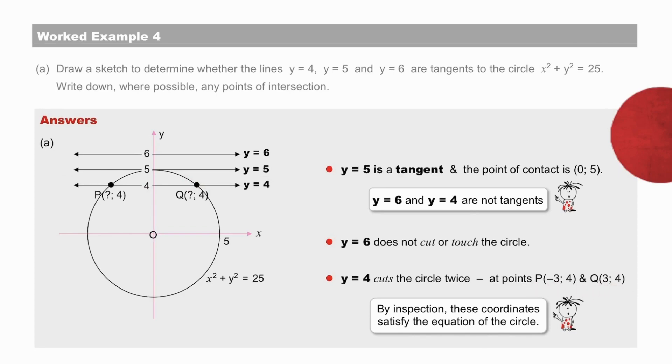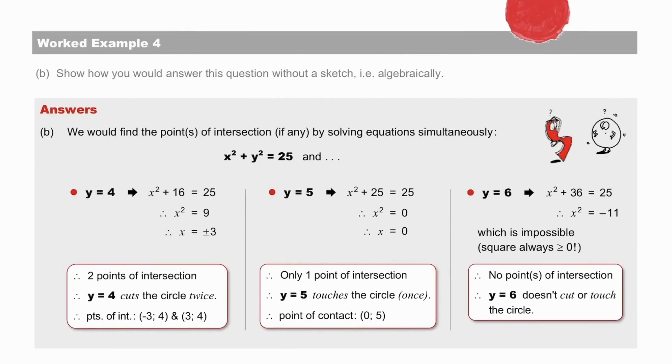We calculate these coordinates by inspection, using the 3, 4, 5 triangle of Pythagoras, in both instances, finding x equal to 3 and x equal to minus 3. And now, B, algebraically. Pause to check.